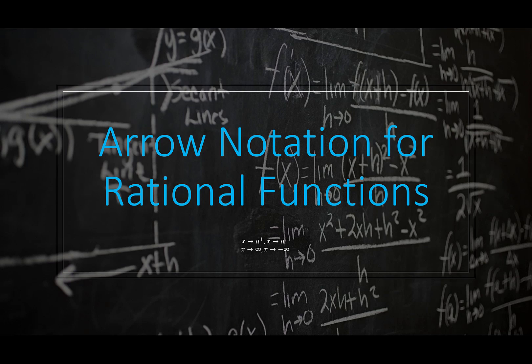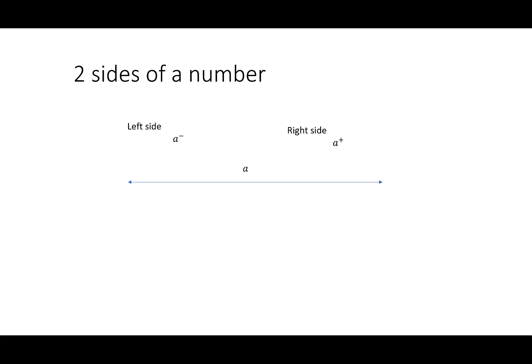Hi everybody! Today I have a quick video for you about arrow notation for rational functions. To talk about what that really means, we are going to look at a number a and consider it having two sides: a right side and a left side.